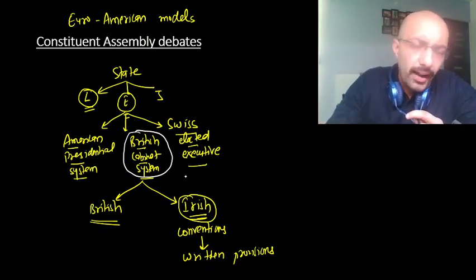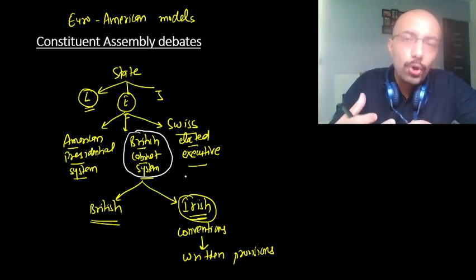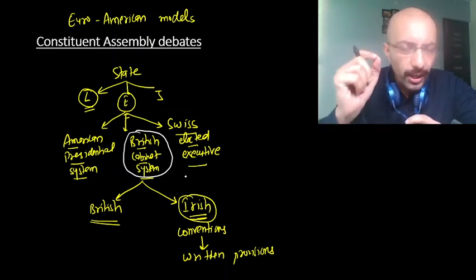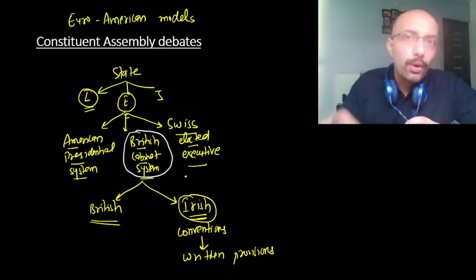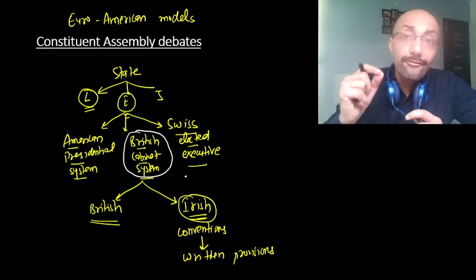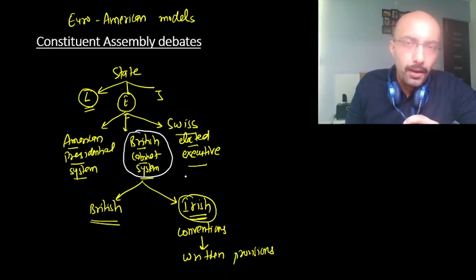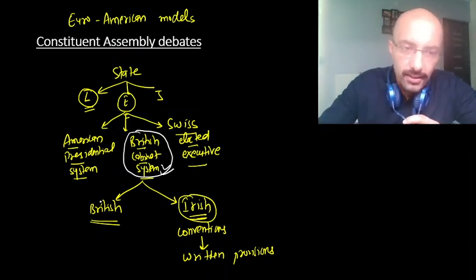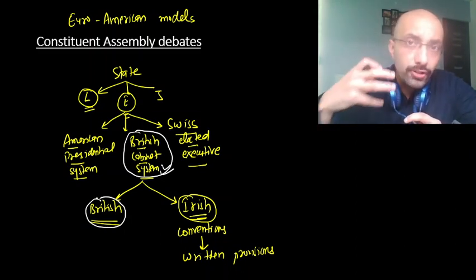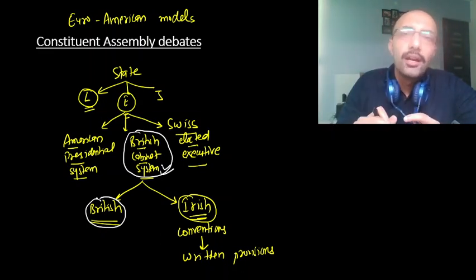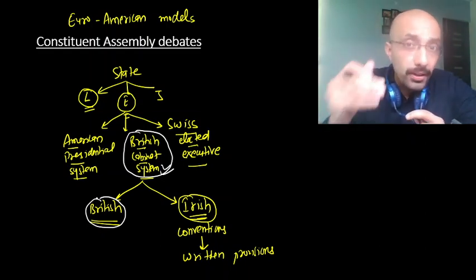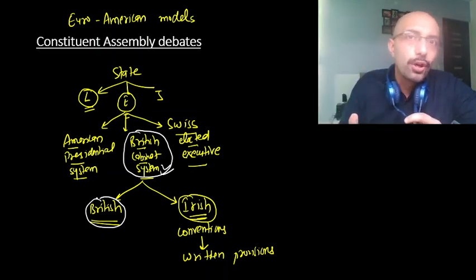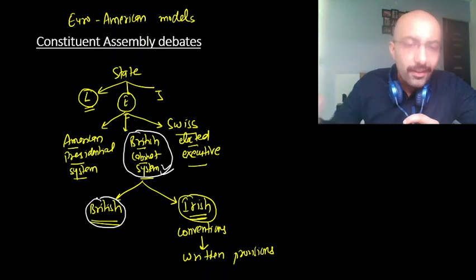The simple reason was that Indian people were familiar with the system — some form of it, in limited form, was prevalent in India during British times. It was prudent and wise to adopt and continue with the system with which the majority of Indians were familiar. Once we zeroed in on this system, the next question was: is it the British model, in which many practices and traditions are left only on conventions, or the Irish model in which conventions are converted into written provisions?